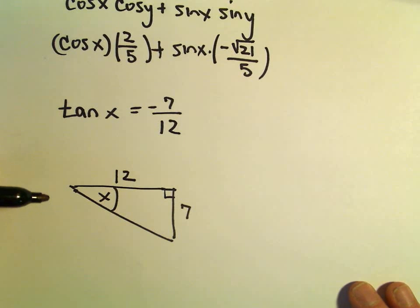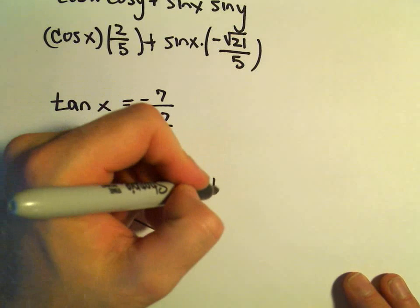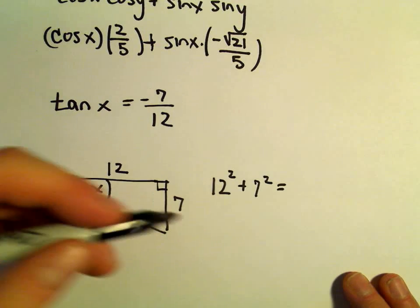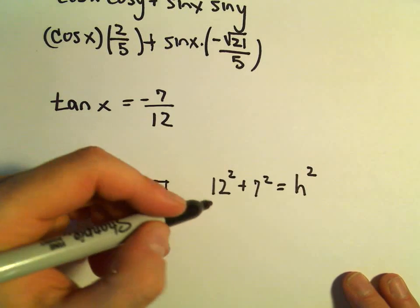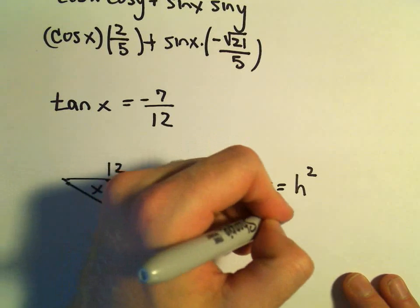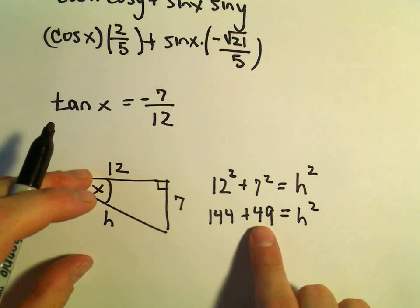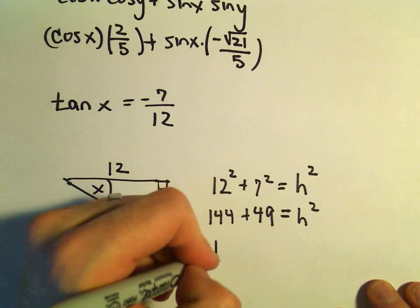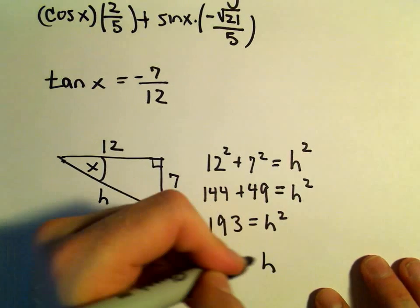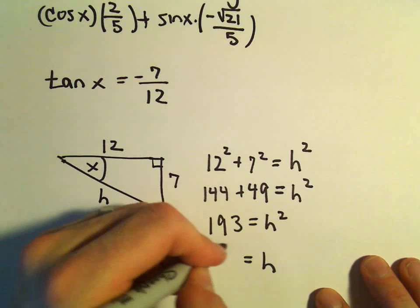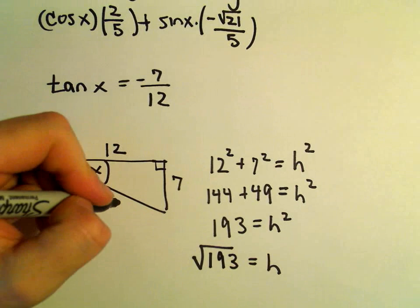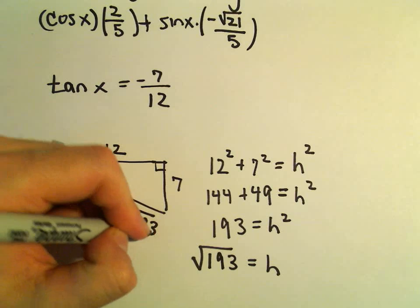We have to figure out the hypotenuse using Pythagorean theorem. So 12 squared plus 7 squared—maybe we'll call that h for hypotenuse—equals h squared. 12 squared is 144, 7 squared is 49. 144 and 49 gives us 193 equals h squared. So we can take the square root of both sides and get that h equals the square root of 193.